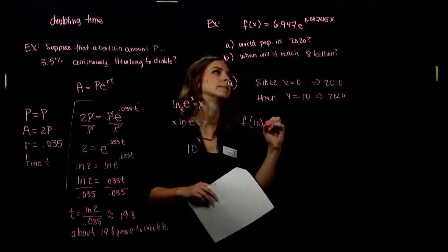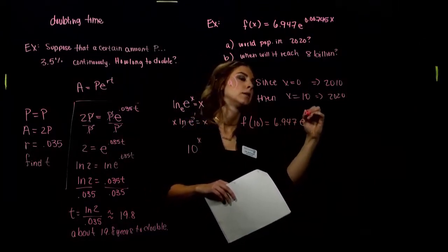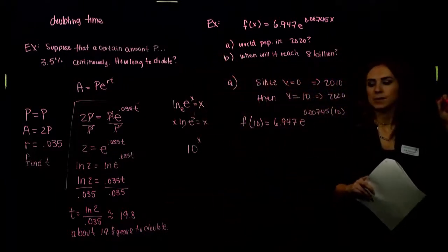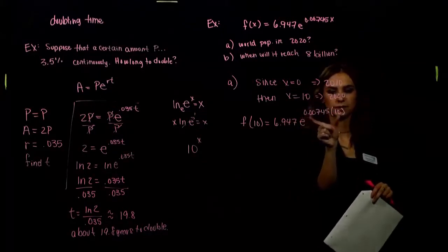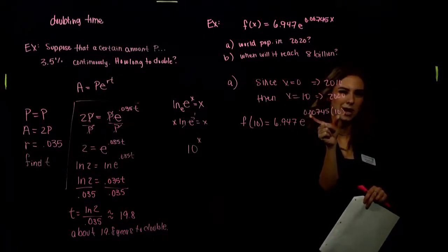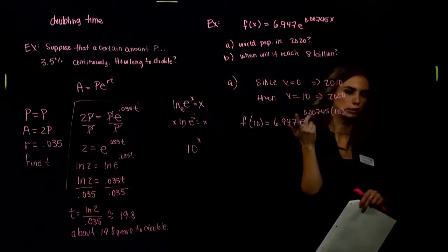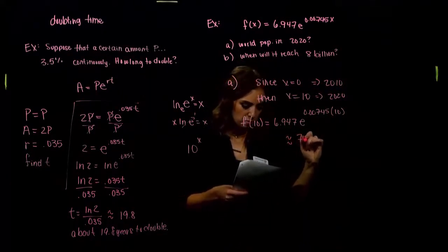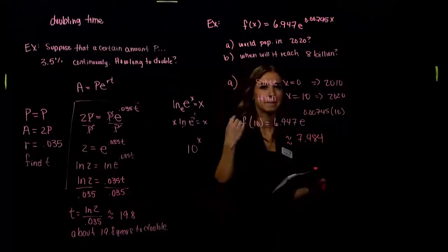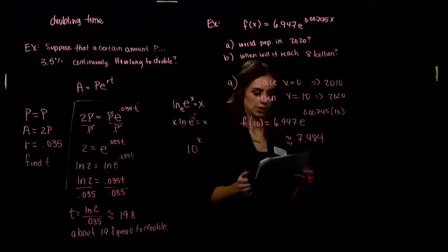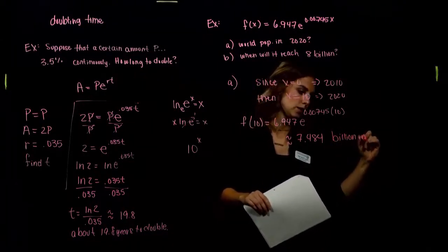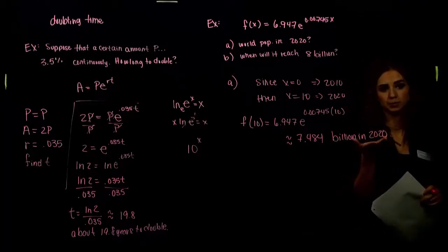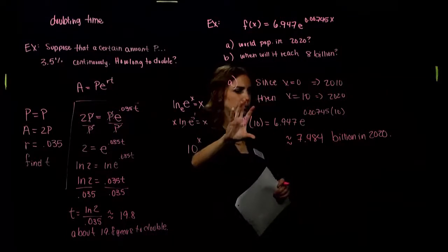Evaluating f(10) = 6.947 · e^(0.00745 × 10) = 6.947 · e^(0.0745). Computing e^(0.0745) ≈ 1.0773 and multiplying by 6.947 gives approximately 7.484 billion people in the year 2020. This is the projected population 10 years after 2010.